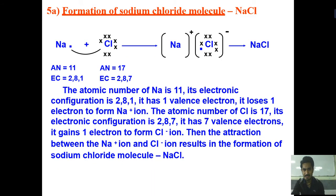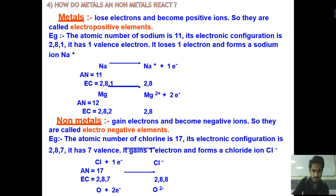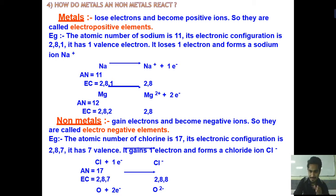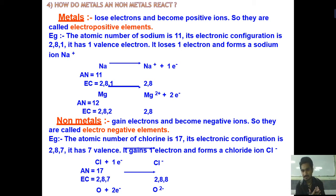Today we are going to discuss the reaction between metal and non-metal. For that, we need to study the elements and ions present in metals and non-metals. Generally, metals have positive ions present in them. If you don't know about this, you can see the Standard 9 Chapter 3 lecture where I have already discussed elements, molecules, compounds, and ions.